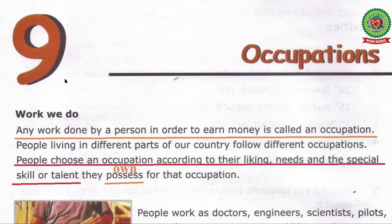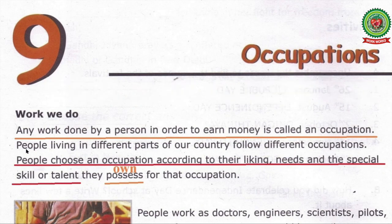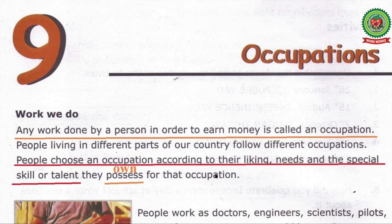Now come to the reading. Chapter 9, Occupations, page 44. Work we do: any work done by a person in order to earn money is called an occupation. People living in different parts of our country follow different occupations. People choose an occupation according to their likings, needs and the special skill or talent they possess for that occupation. Please underline the word 'possess' and write the meaning: own.